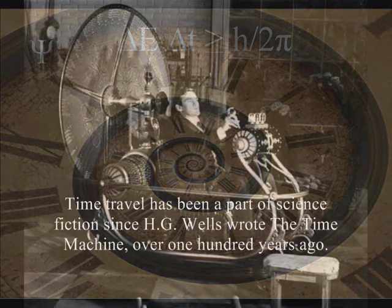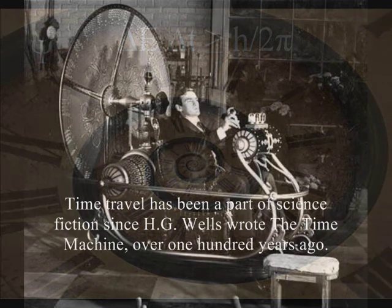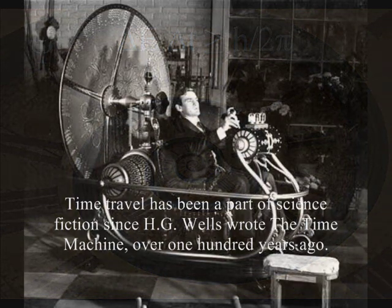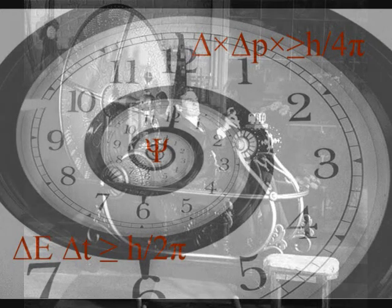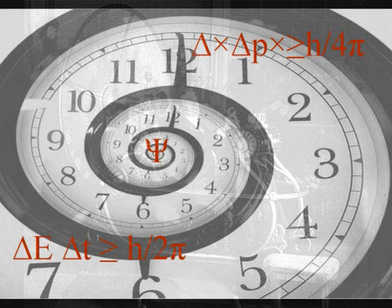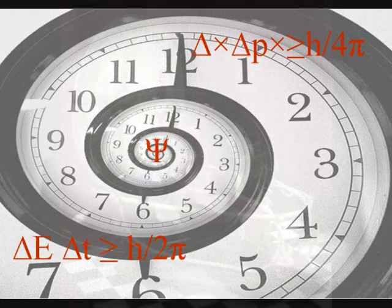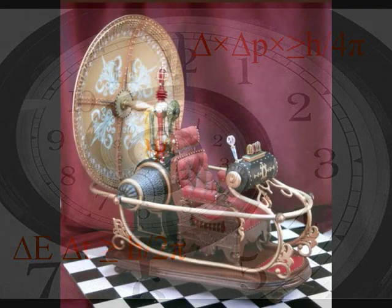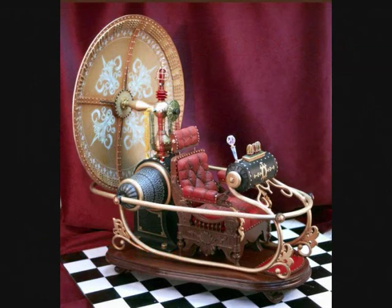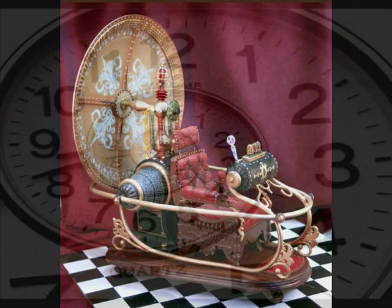If we could travel back in time and kill a famous person in history before they become famous, the person would never become famous, meaning we would have no reason to go back to change time in the first place. Therefore we never travel back to change time and the person would once again become famous, meaning we would have to go back in time. This forms a continuous paradoxical time loop.